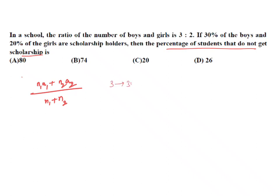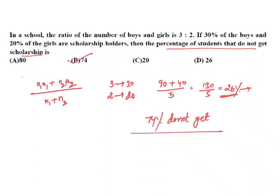3 parts is 30, 2 parts is 20. N1A1 is 90, N2A2 is 40, divided by 5. 130 by 5 gives you 26% of scholarship holders. So this is who hold the scholarship. Therefore, 74% do not get scholarships. He is asking you how many percent of students do not get scholarships. Therefore, 74% do not get scholarships.